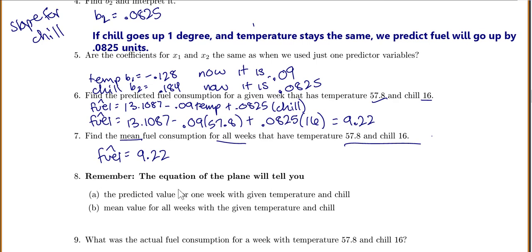Okay, which is my note here. So the equation will tell you the predicted value for one week or the mean value for all the weeks with that set temperature and chill.